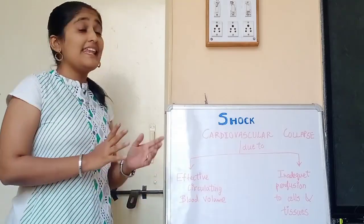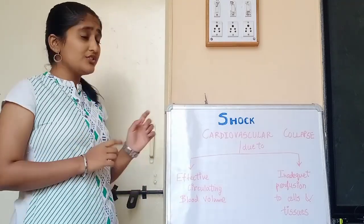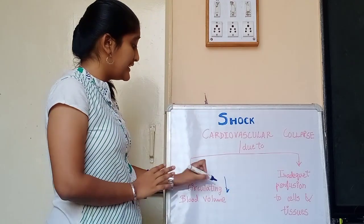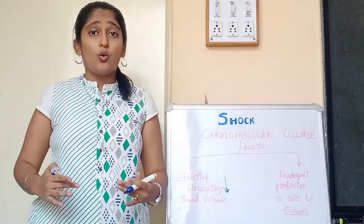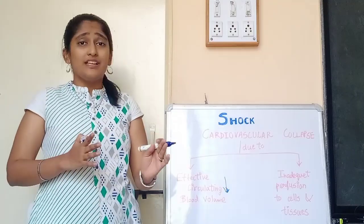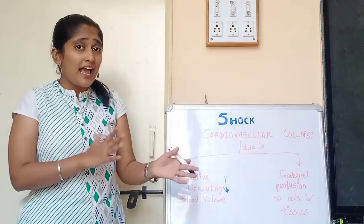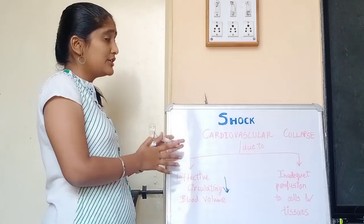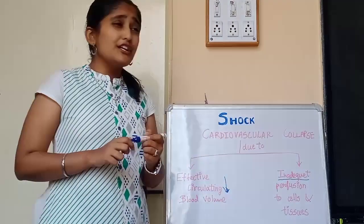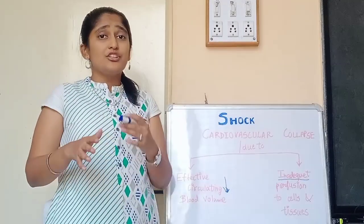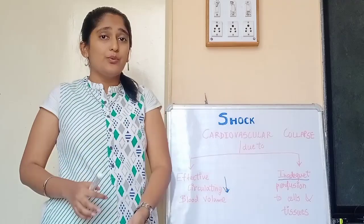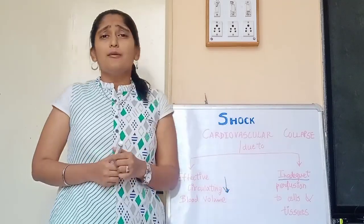Shock is a life-threatening cardiovascular collapse, which is due to reduction in effective circulating blood volume. When the blood flow in our body is reduced, it can go into shock — for example, in an accident with severe blood loss. Another reason is inadequate tissue perfusion: when the exchange of oxygen and nutrients between tissues is not adequate or proper, it may lead to shock.